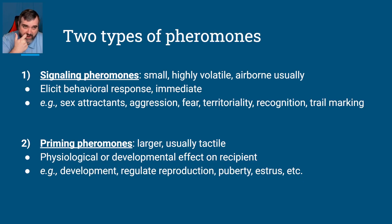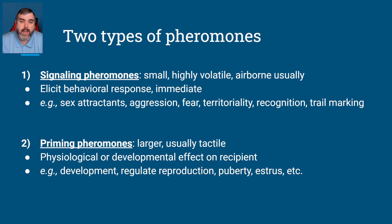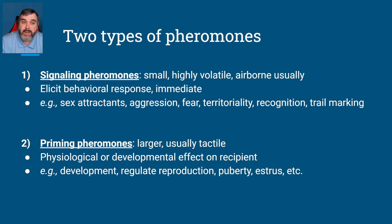There are two types of pheromones you need to be familiar with — you should be able to identify them given some criteria. Signaling pheromones are small and highly volatile, usually traveling through the air. They elicit a behavioral response and tend to be pretty much immediate. This includes sex attractants, aggression, fear, territory, recognition, and trail marking.